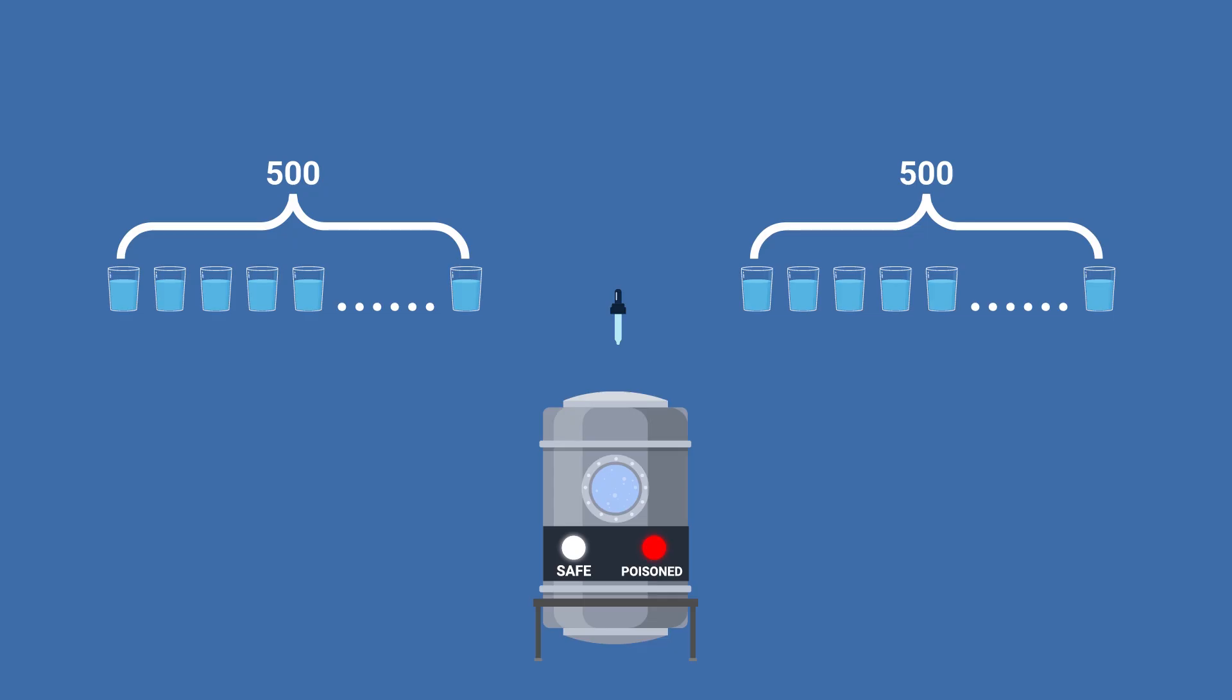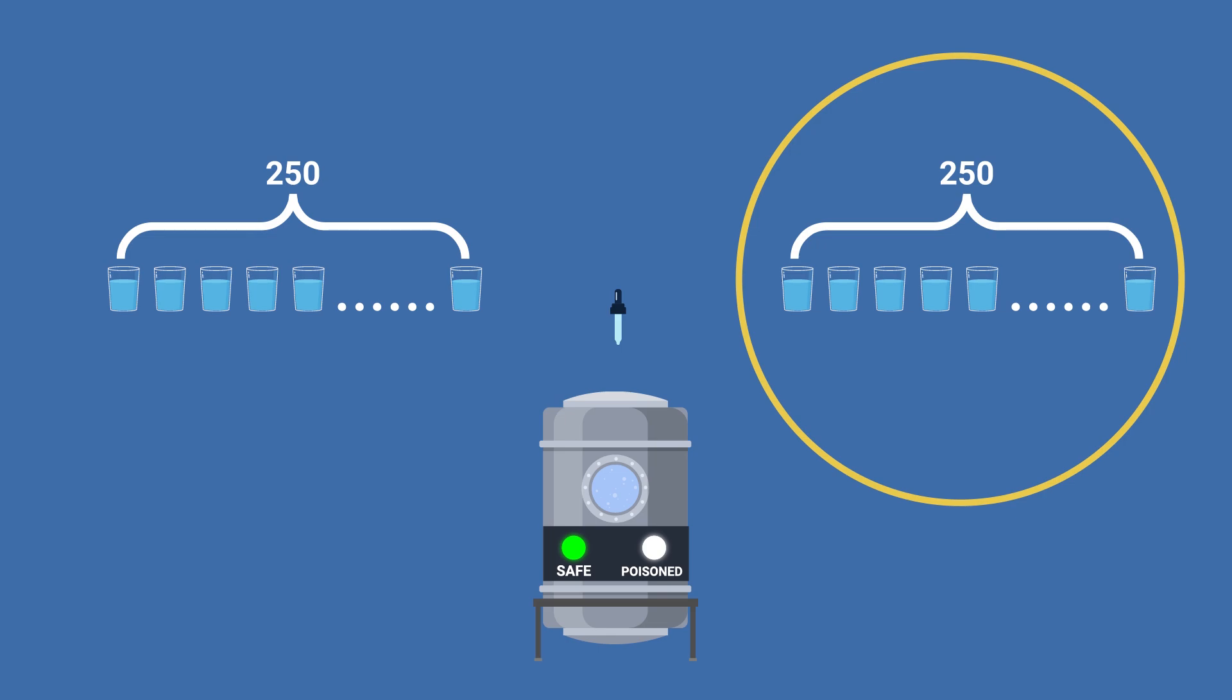If the result is positive for the poison, then you know the one you're looking for is part of that 500, and from there you could split that group into 250 and 250, then put a drop from every drink in one of those groups in the machine and run a second test. If it's negative, let's say, then the poison drink is part of the other 250, which you can then split again and repeat exactly the same steps.